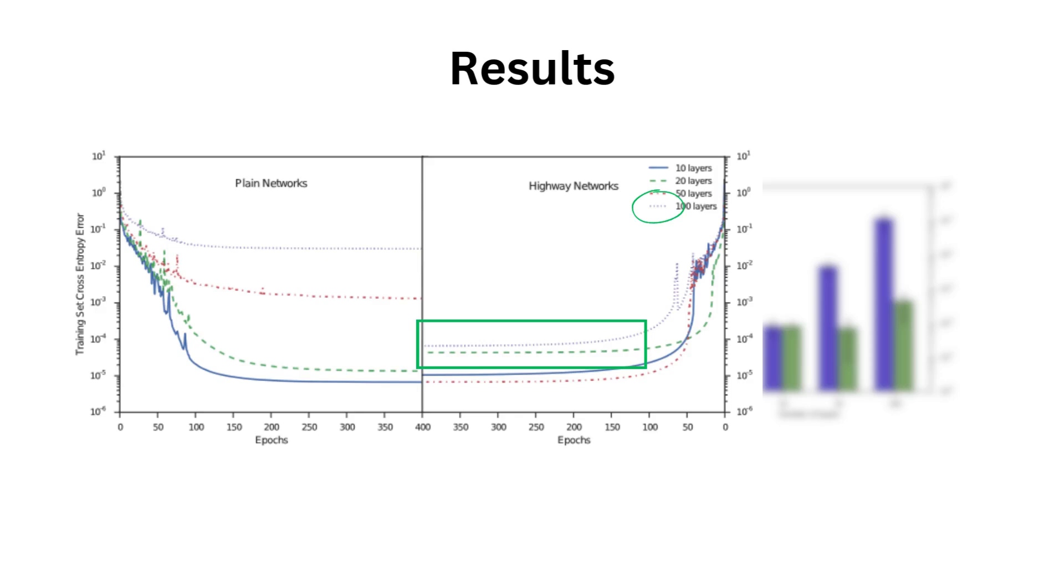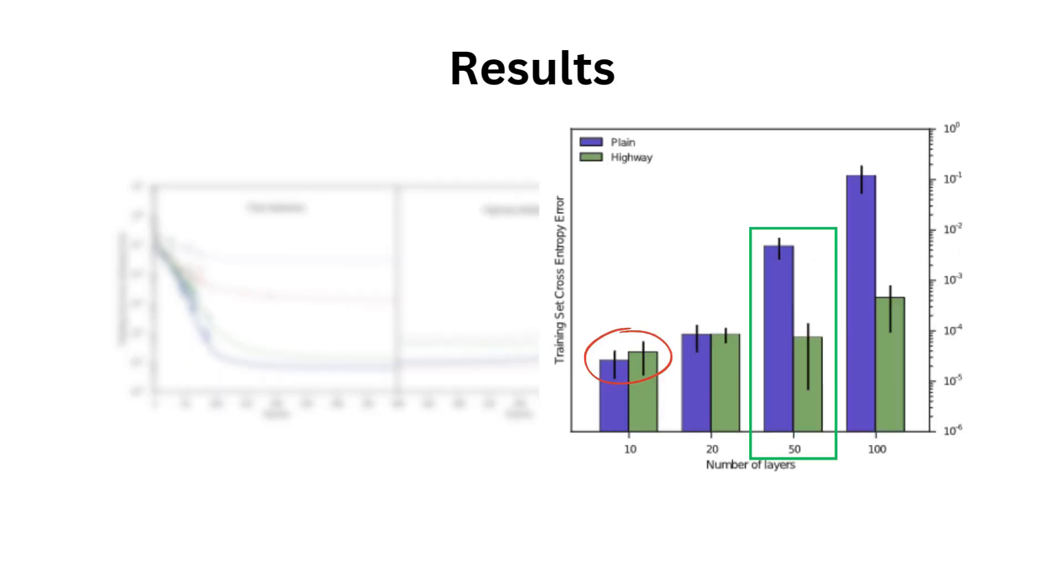While on the right, the highway network with 100 layers is more performant than its plain counterpart and has similar results to its other layer depths. As we can see on the right, the optimal network depth for MNIST seems to be 10 layers, but the 50 layer highway network still exhibits very good performance. We'll see afterward how this is the case.